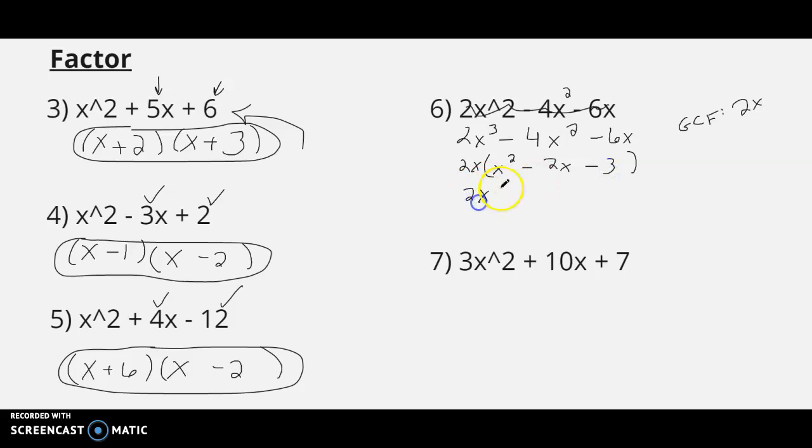Next step, we can break down that quadratic trinomial. Question, what factors of negative 3 add up to negative 2? That would be minus 3 and plus 1. There's a completely factored form. So a couple levels of factoring on that one.